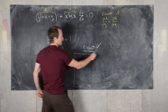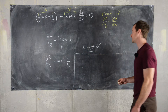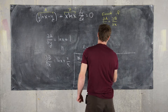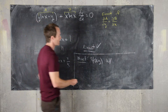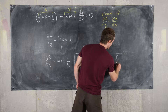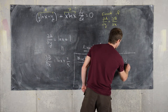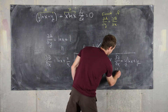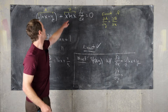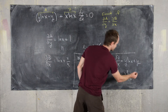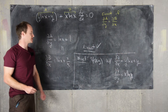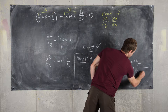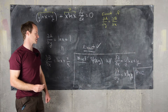Now let's outline our solution strategy and then find a solution. We want some function Psi such that the partial of Psi with respect to X equals function A, which is Y times the natural log of X plus Y, and the partial of Psi with respect to Y equals function B, which is X times the natural log of X. If we find such a function Psi, then Psi equals some constant is an implicit solution of this differential equation.